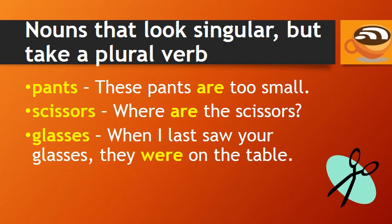Here are some nouns that appear singular but take a plural verb. Pants: "These pants are too small." Scissors: "Where are the scissors?" Glasses: "When I last saw your glasses, they were on the table." Each of these words — pants, scissors, and glasses — refers to a single object, but they take the plural form of the verb.